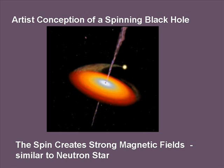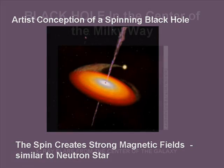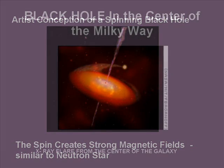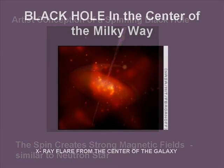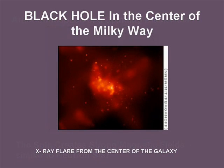That stream coming up and out of the central axis is actually particles and radiation escaping from the center — a little bit like the neutron star. Some of the spin and behavior are similar between black holes and neutron stars.